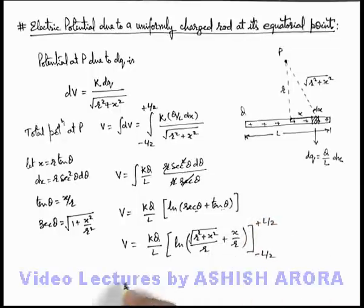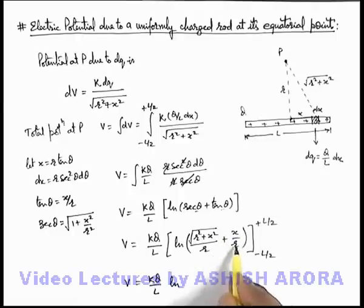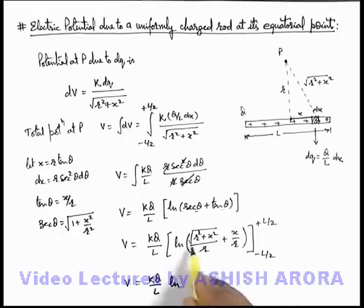On substituting limits the final result we are getting is kQ/L ln of: when I put x as L/2 it'll be √(L² + 4r²)/2r + L/2r. And when we substitute the negative limit, the same parameter will be there.